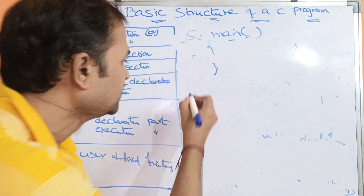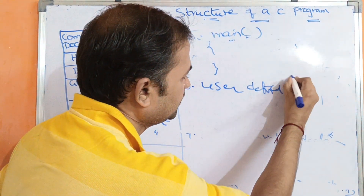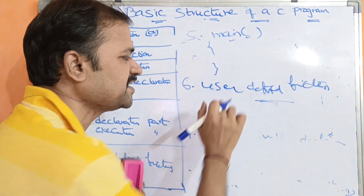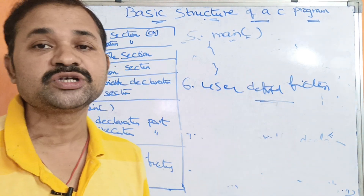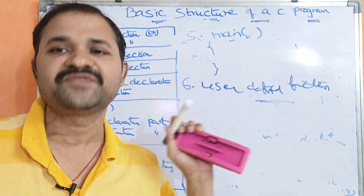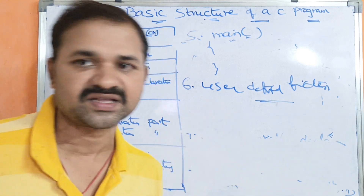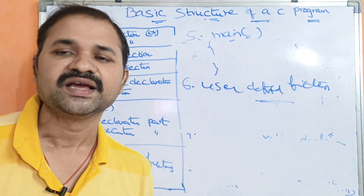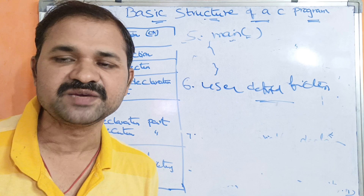The last section is the user defined function. A user defined function is a function which is defined by the user. The user can define a function with any name and logic. The main function and user defined functions can be differentiated — the main function is defined first, and user defined functions are defined separately. This is the basic structure of a C program.